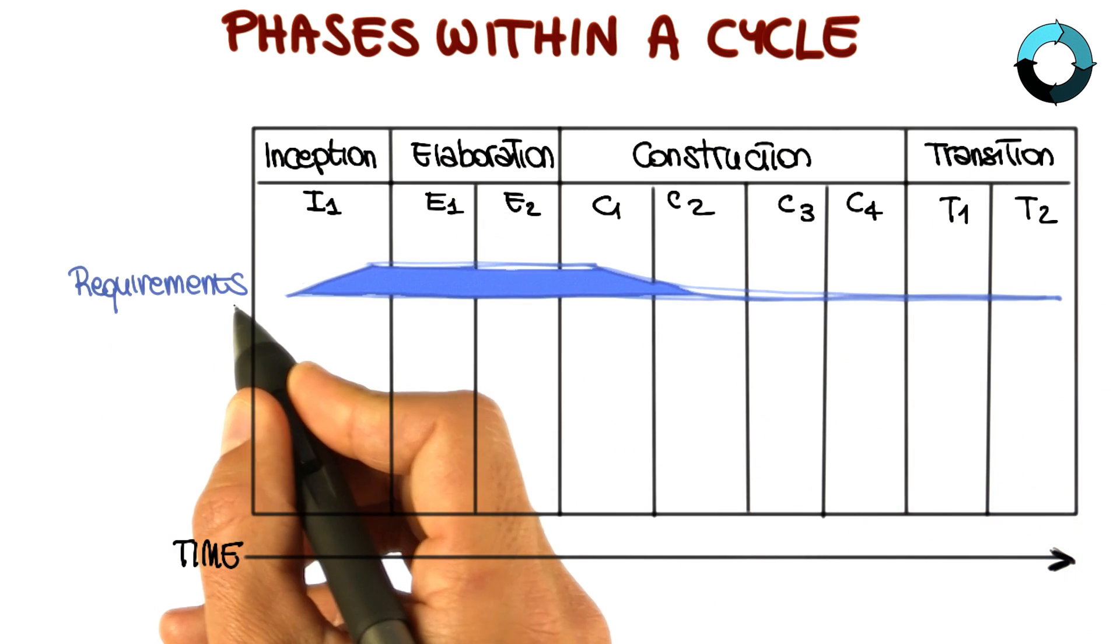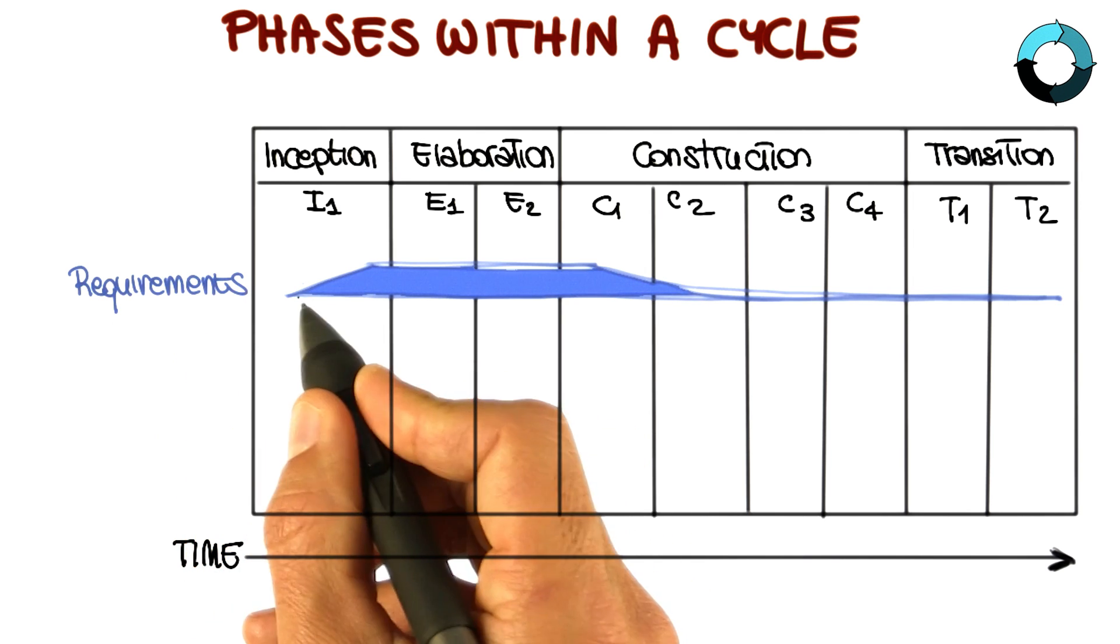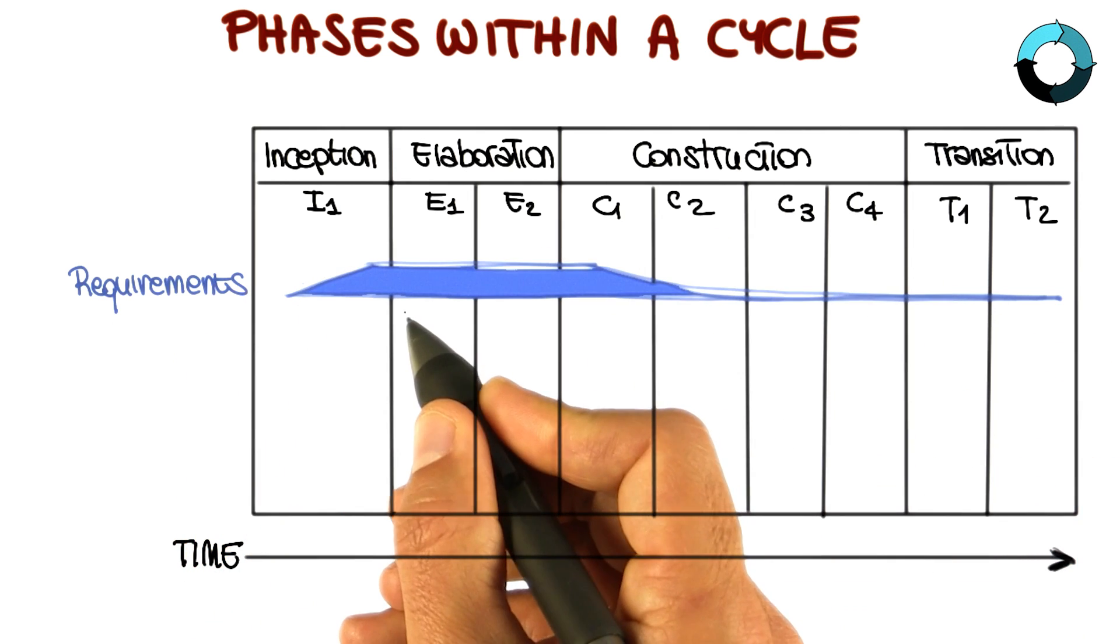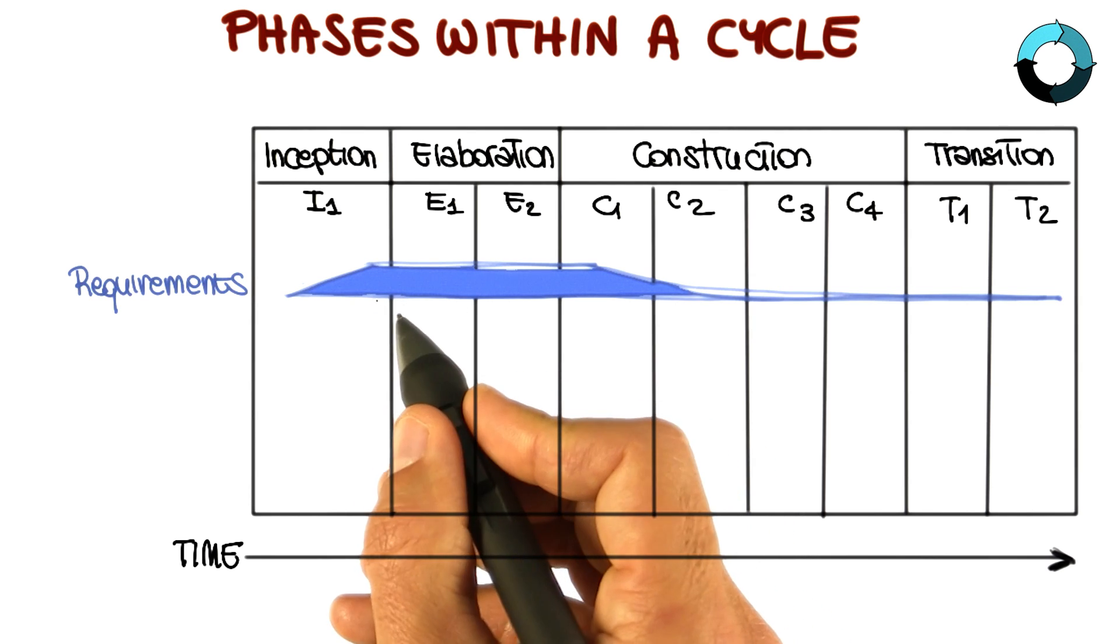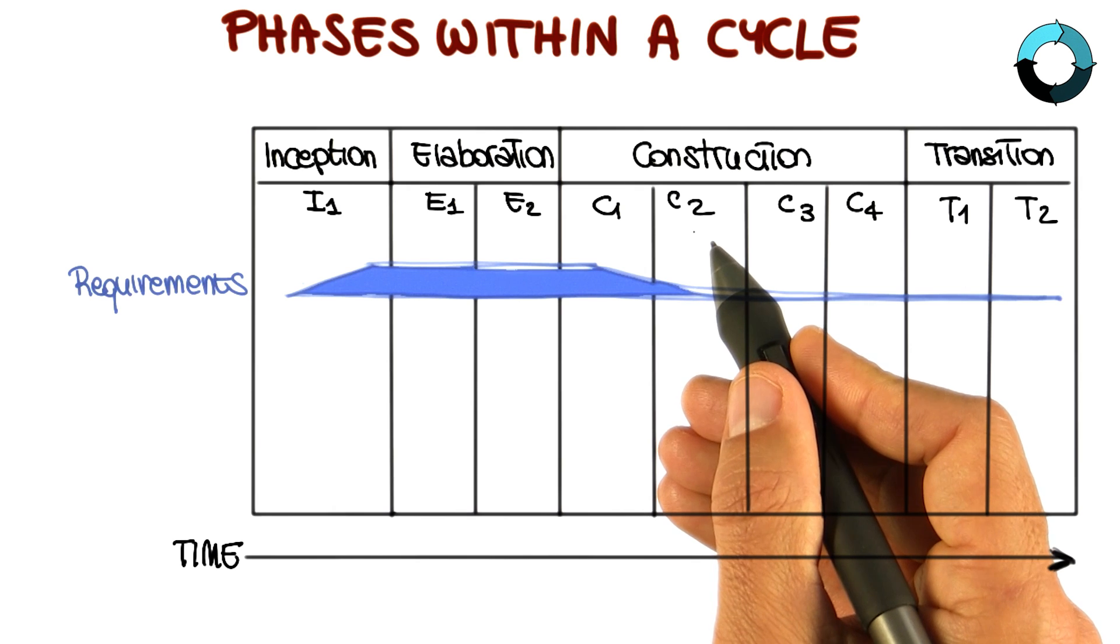So what I want to do now is to show the actual traditional software development activities here on the left, and also show you, using this diagram, how these activities are actually performed in each of the RUP phases. So let's see what this representation means.